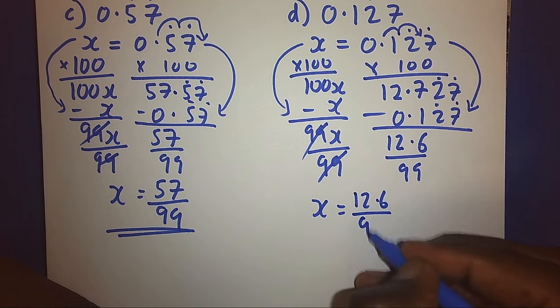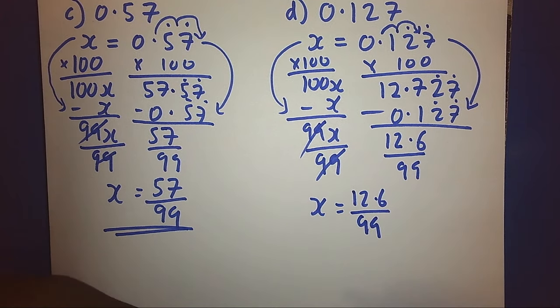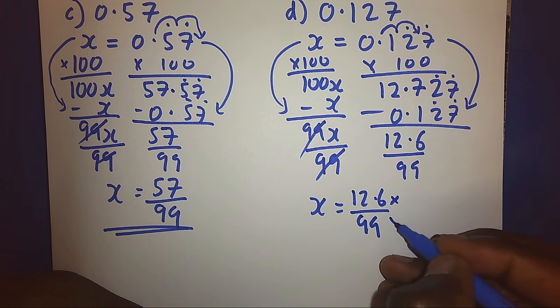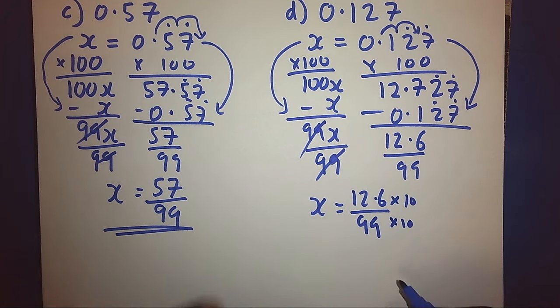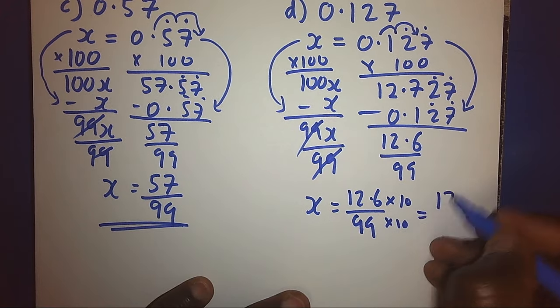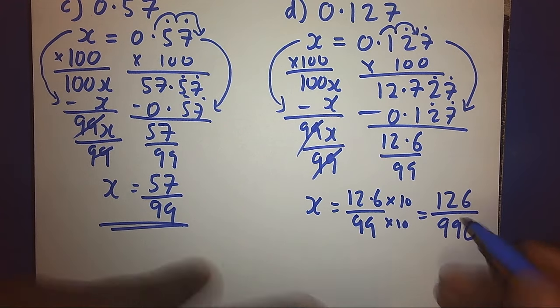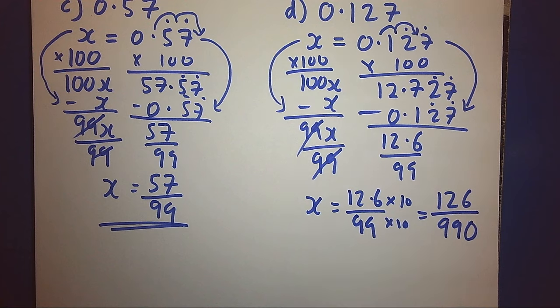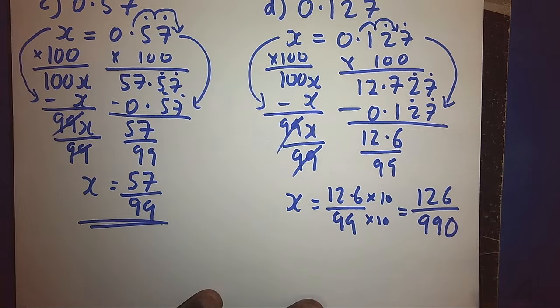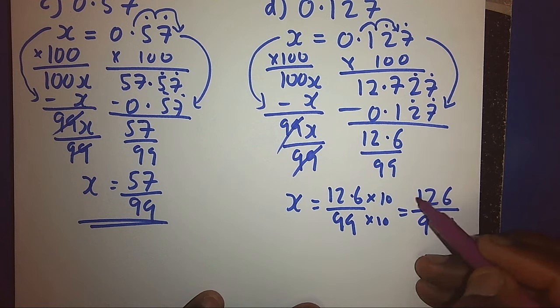But because of a decimal, we must multiply by 10 on both sides, up and down, to remove the decimal. So we shall have 126 over 90. But when you look at the question closely, you will see that we can still simplify. By 2, 6, 3.